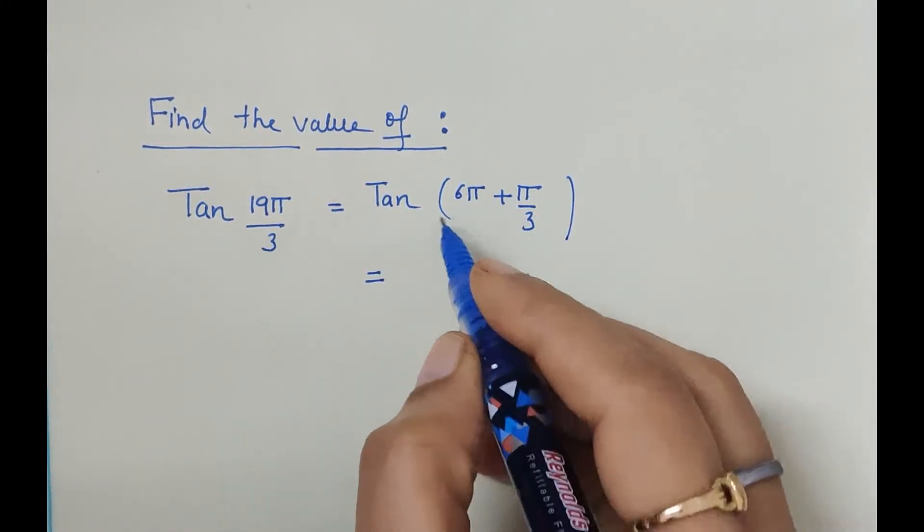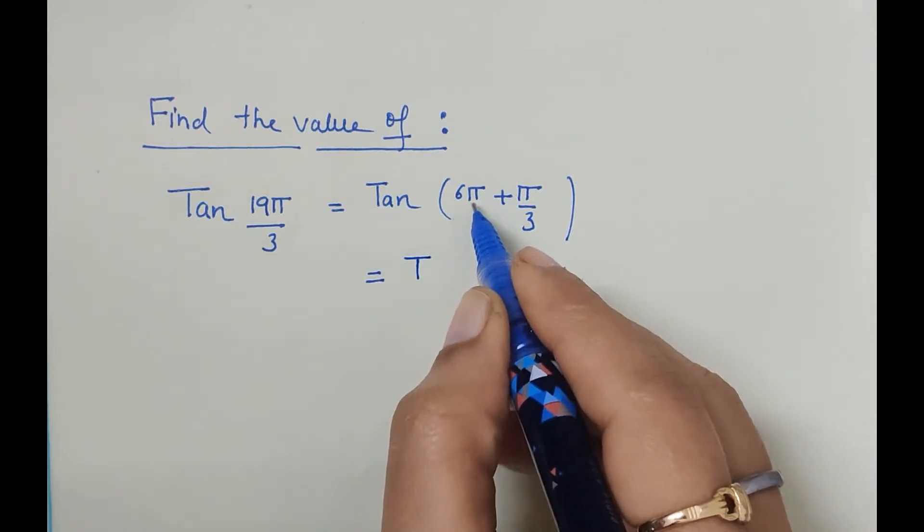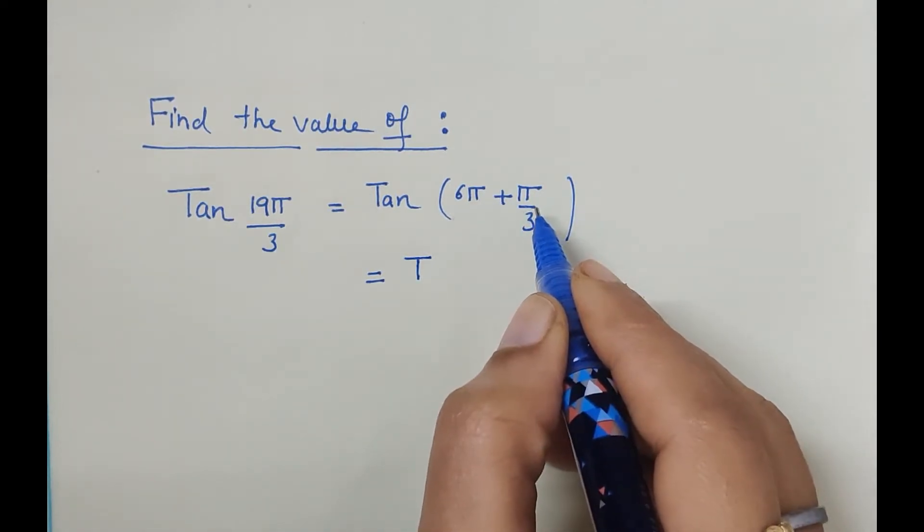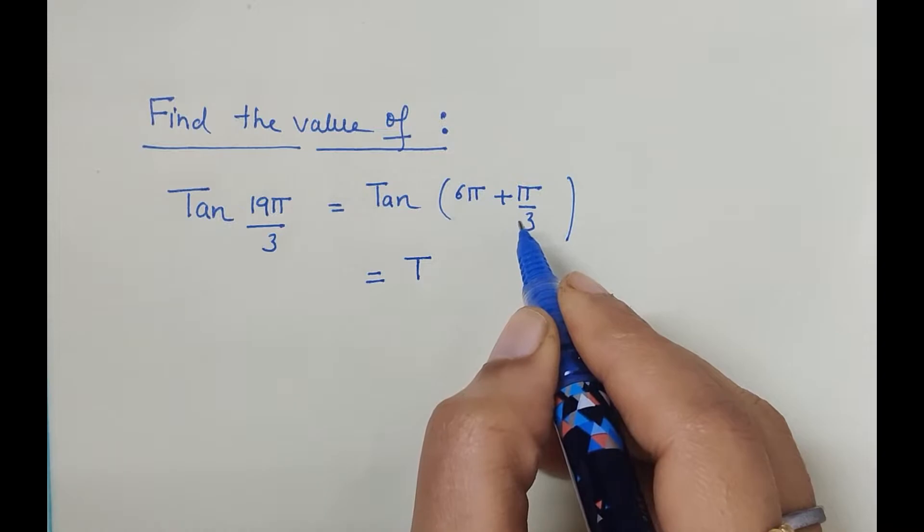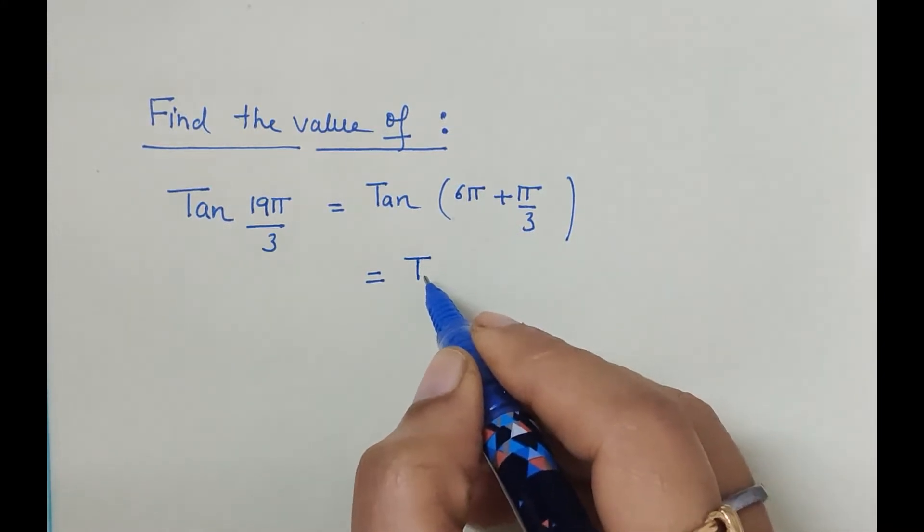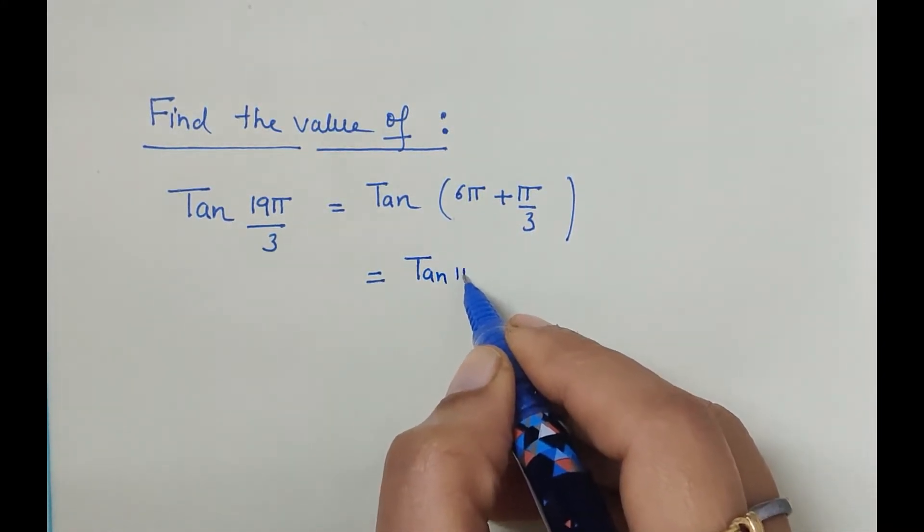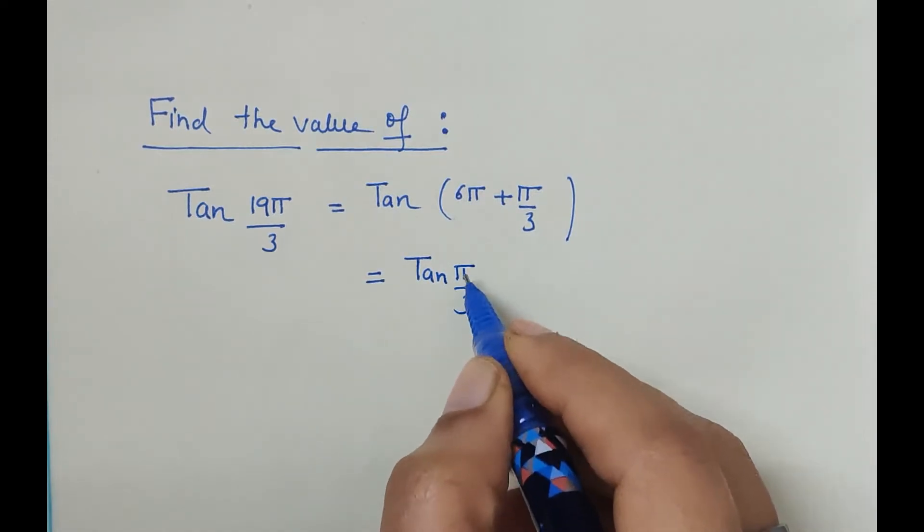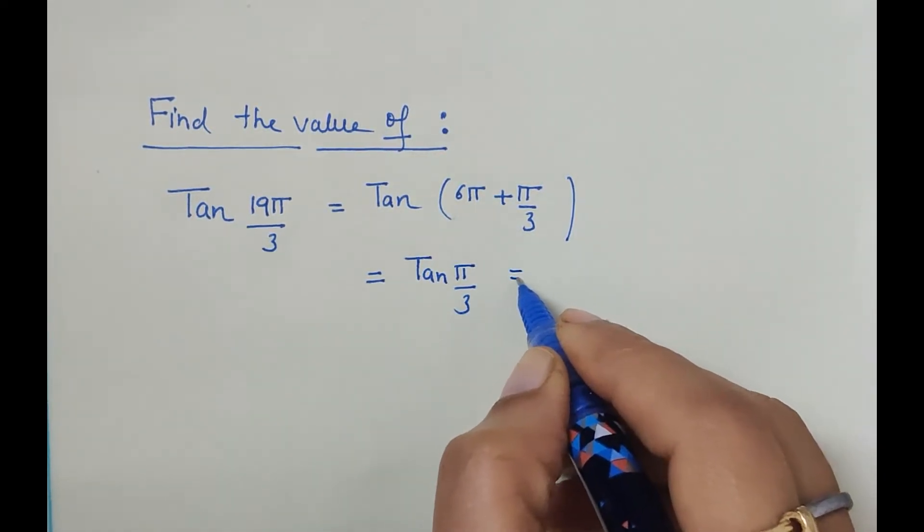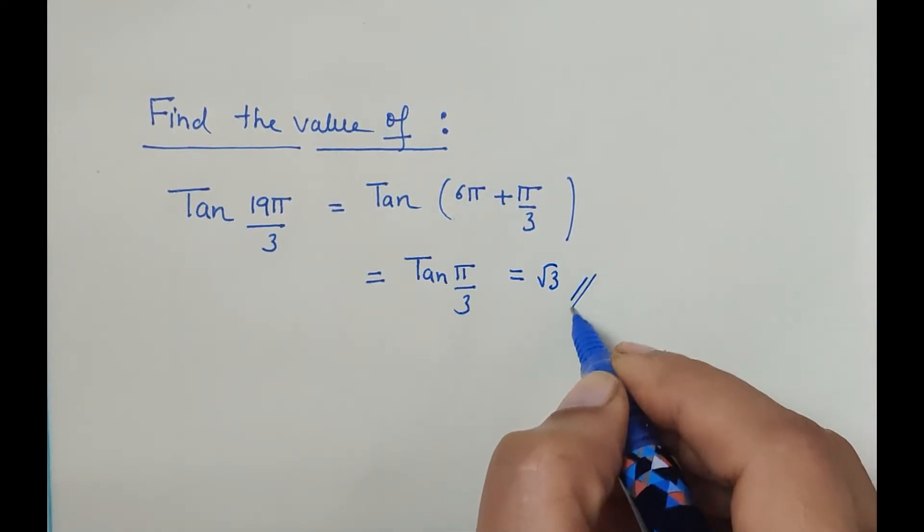We can write it as tan π by 3, and this is 360° plus theta, which means first quadrant where all trigonometric functions are positive. So it is tan π by 3, and π by 3 is nothing but 60°, so tan 60° is √3. √3 is the answer for this question.